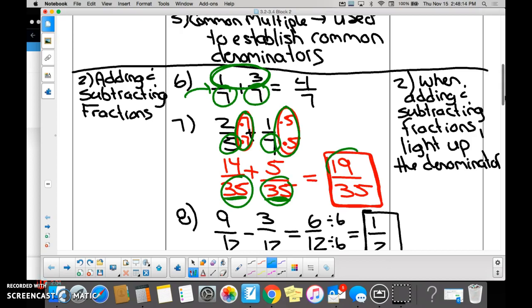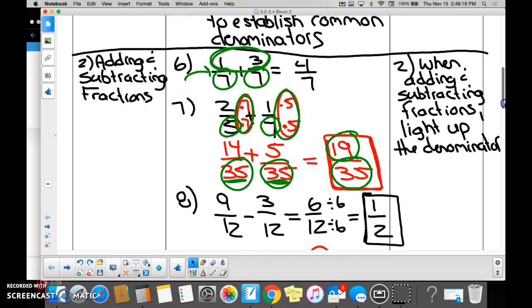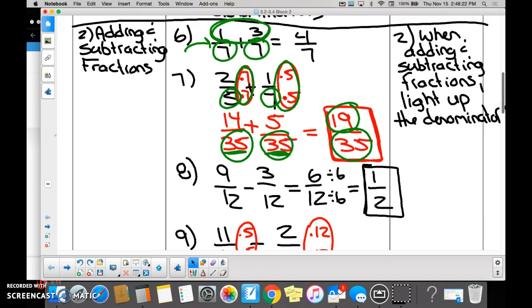Number eight is another problem in which, if we light up the denominators, we realize we don't have to do anything because they're the same. So you just subtract the numerator. Nine minus three, we got six. But is six over six an acceptable answer? What do you have to do? Simplify. Good.